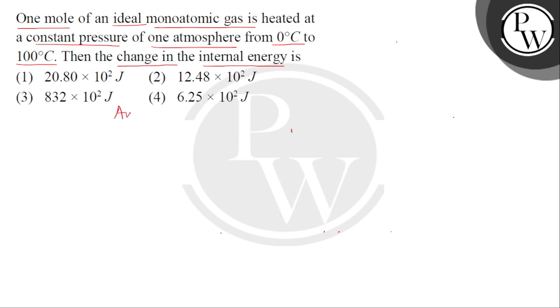So children, given in our question is an ideal monoatomic gas. It means it is single atom and the number of moles n = 1. Now it is maintained at constant pressure, 1 atmosphere.